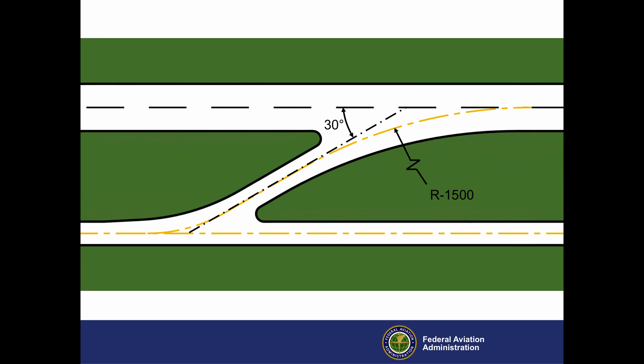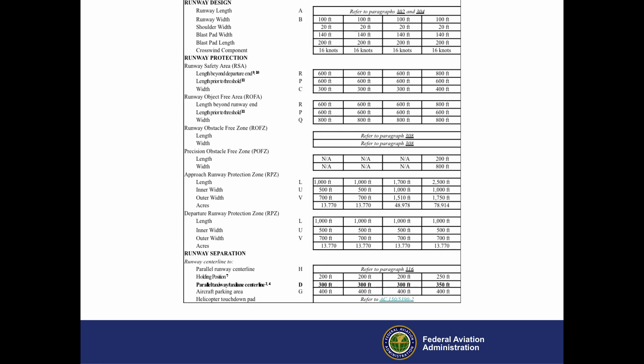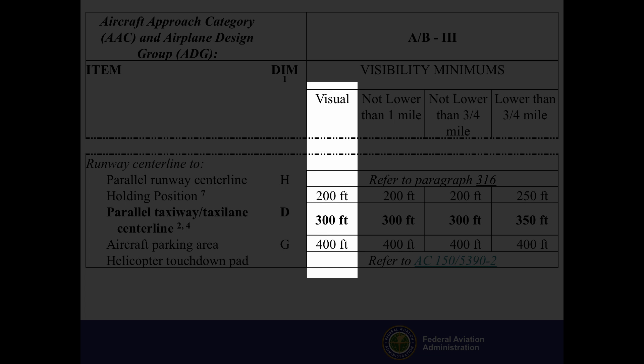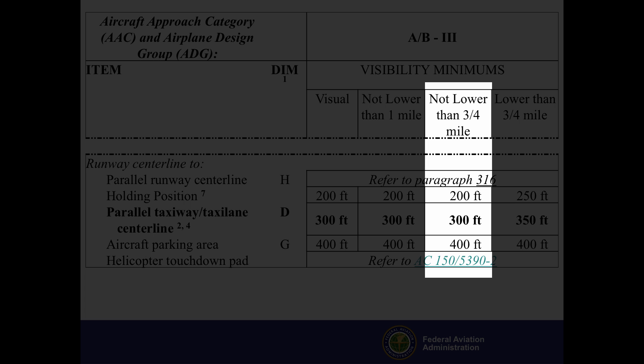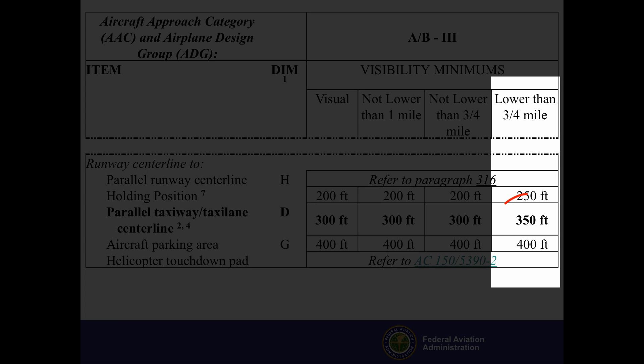High-speed exit taxiways are for one-way traffic — they are not runway entrances or crossings. If the exit does not include a reverse turn to the parallel taxiway, determine the runway centerline to taxiway centerline separation based on airspace requirements for the aircraft approach category, airplane design group (ADG), and visibility minimums as detailed in the Airport Design AC. For example, for aircraft approach categories A and B, ADG-3, the minimum distance is 300 feet for visual approaches and approaches not lower than 1 mile or 3/4 mile visibility minimums, and 350 feet for approaches with visibility minimums lower than 3/4 of a mile.